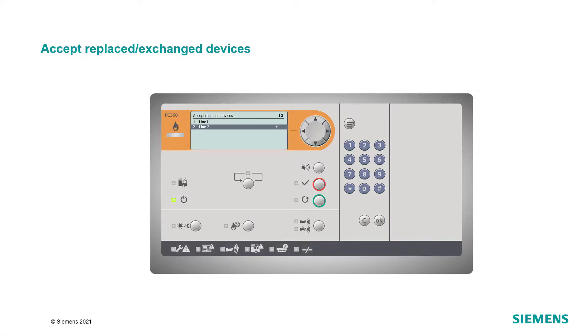Now, select the detection line which had been switched off before and confirm your selection with OK twice.